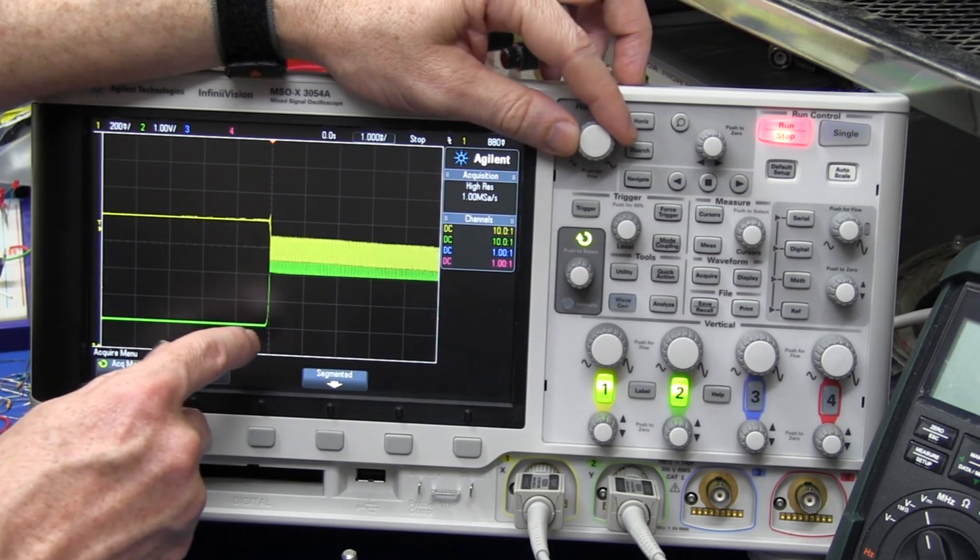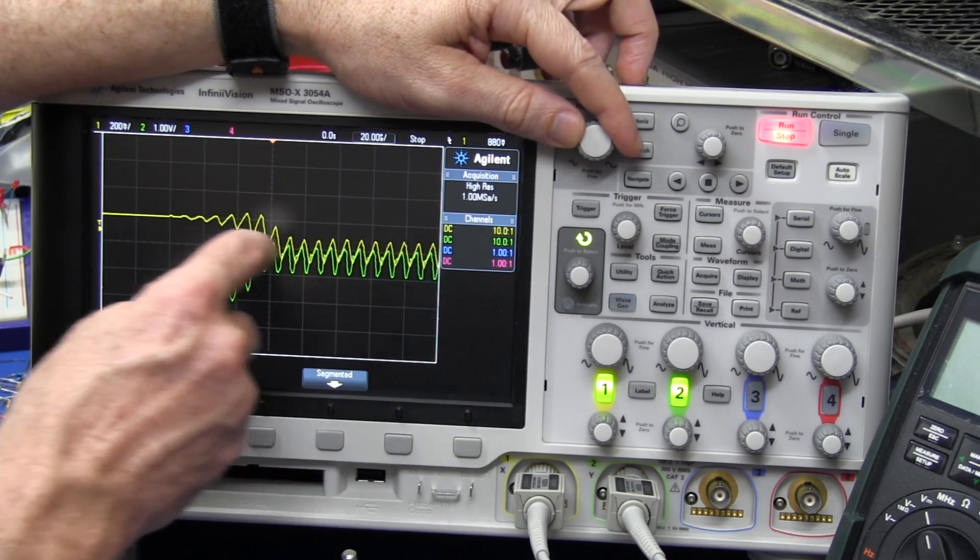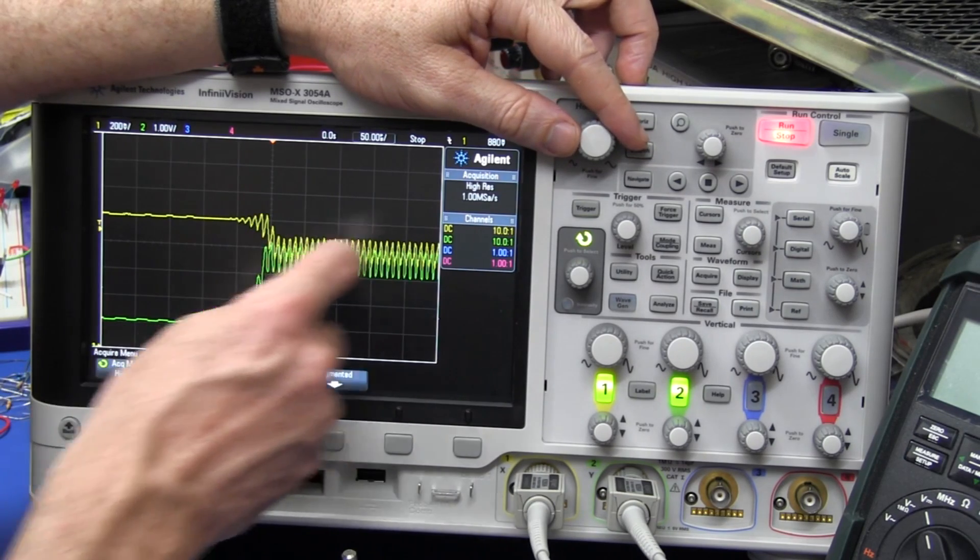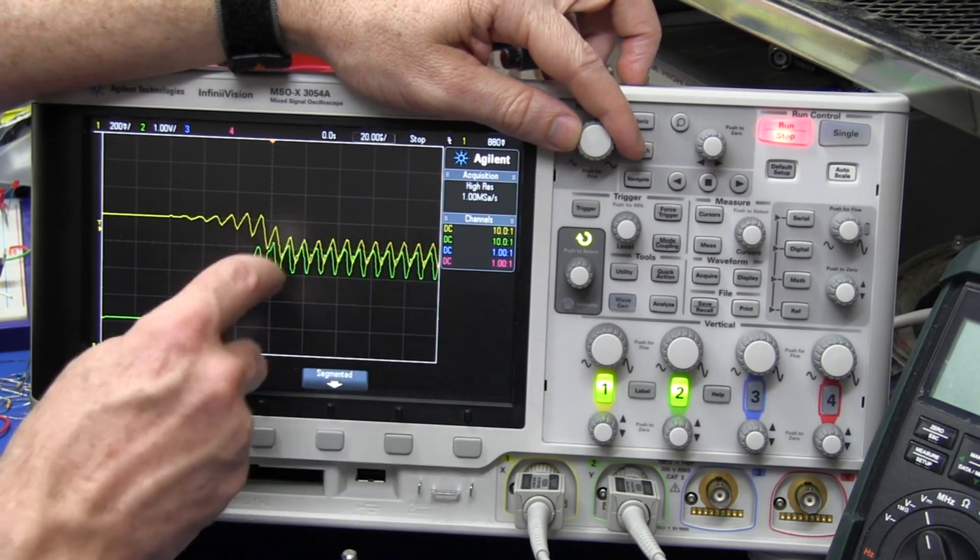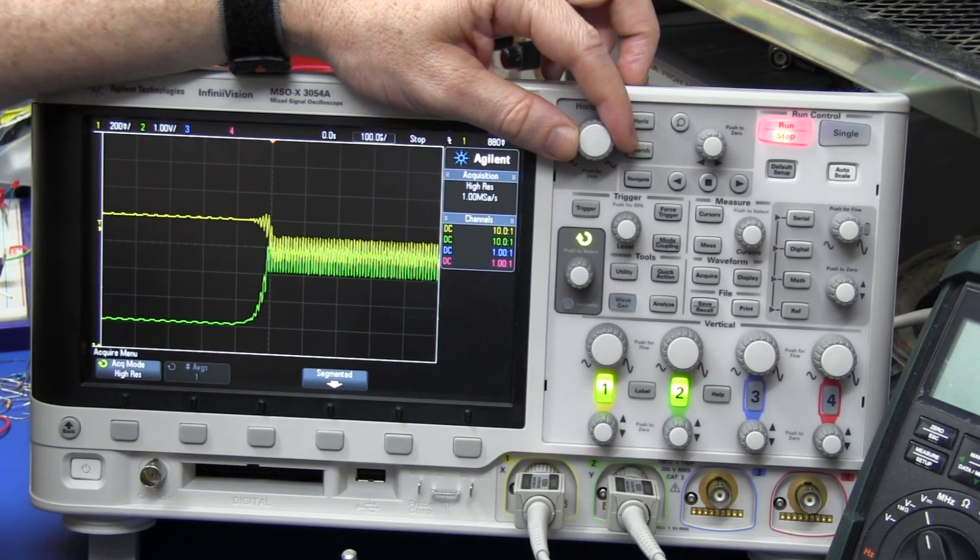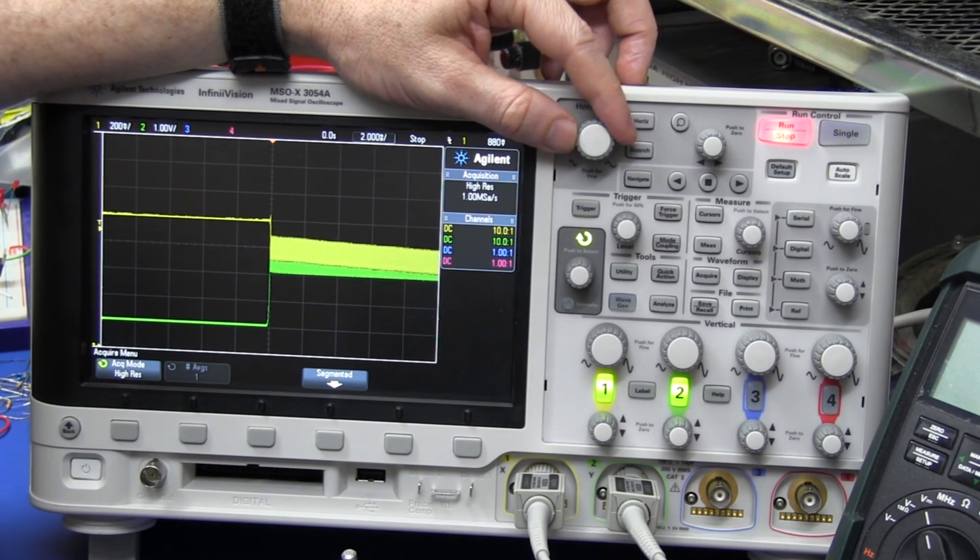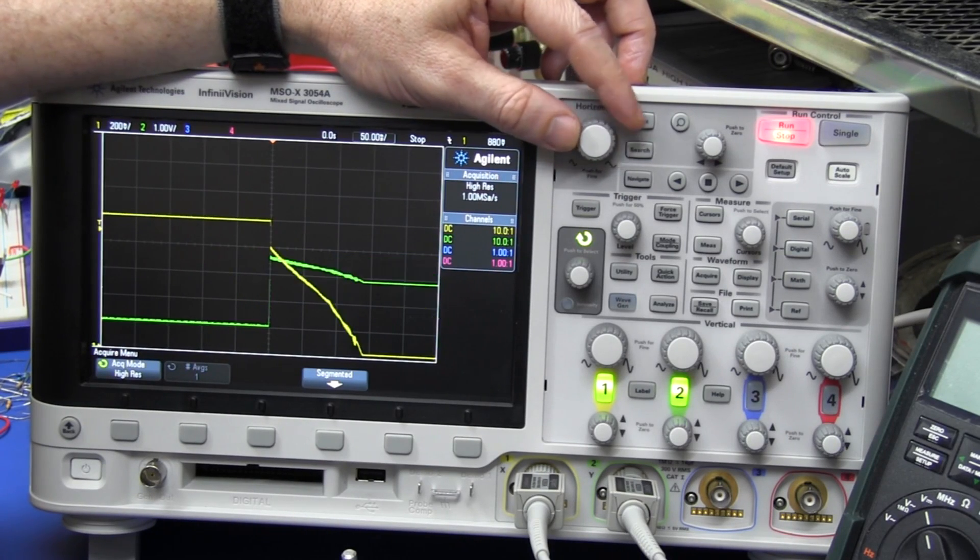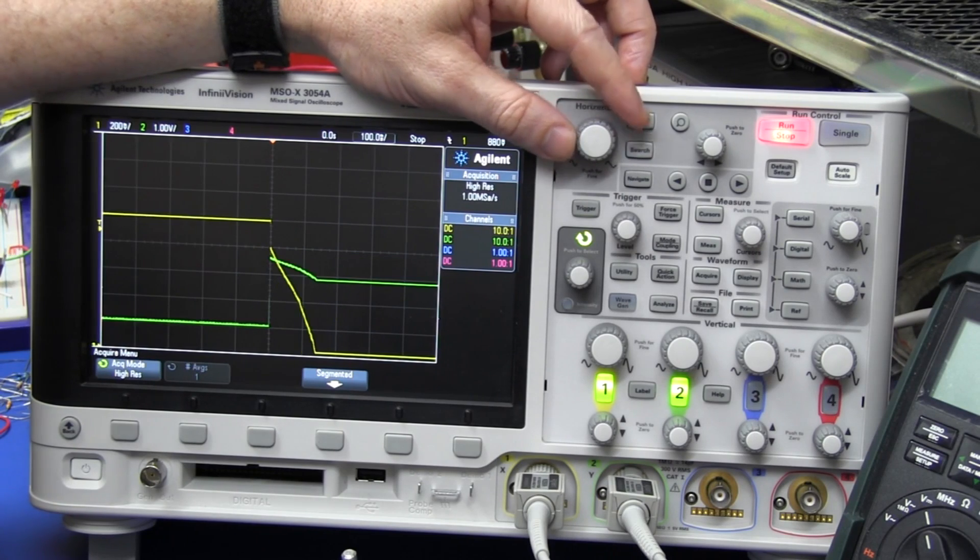But when you zoom in, look at that. Only when you zoom in can you see that noise on the signals, but when you zoom out like that, you don't actually see it.